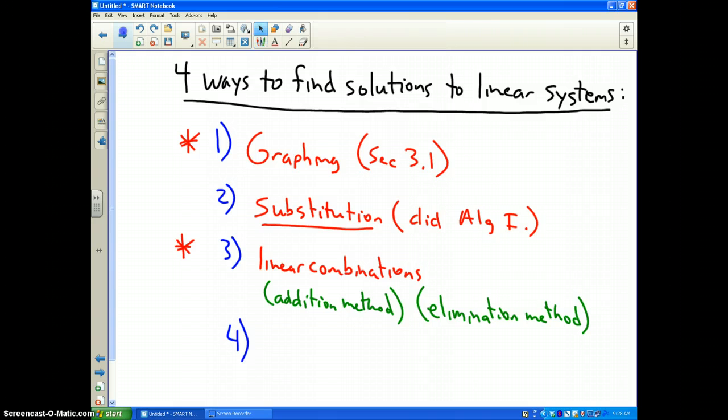And the last method that we are going to study in this unit is the method of matrices. The 3 with the star by them are the 3 that we are going to look at and practice during this course. The substitution method, as I mentioned, we did during algebra 1. If you would like to pause the video and copy those down, please do. But otherwise that wraps up this video as an introduction to what we are going to do in units 3 and 4.